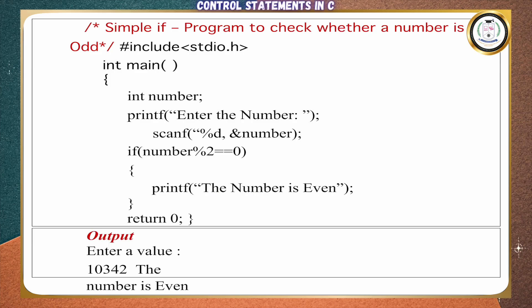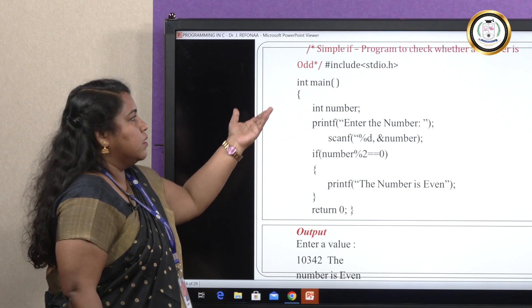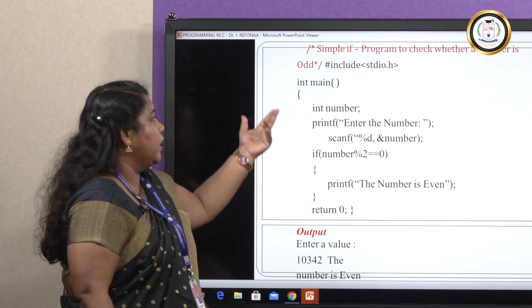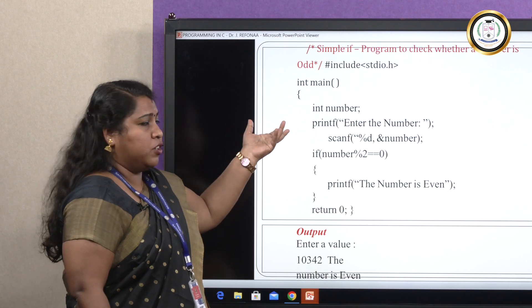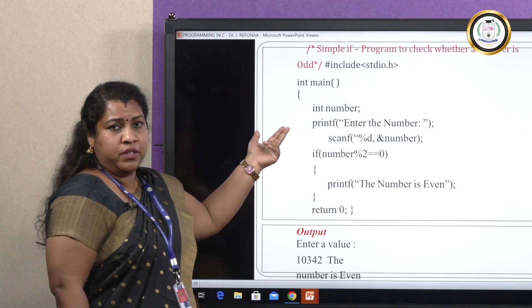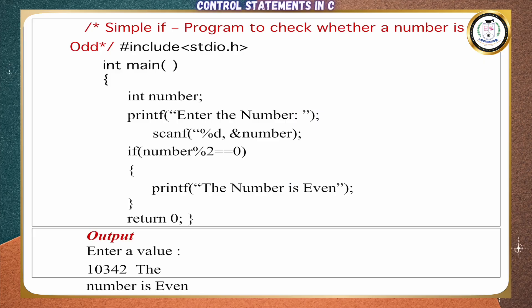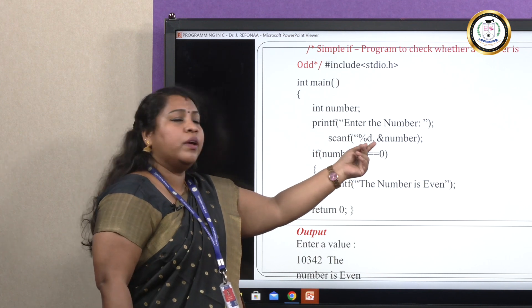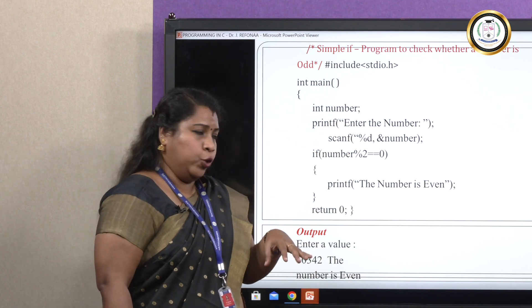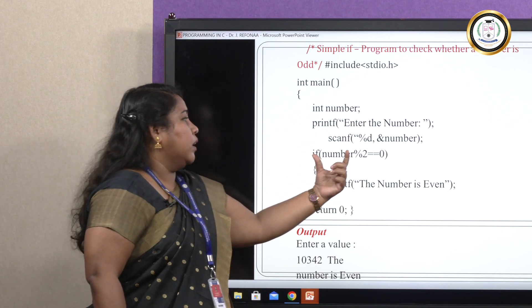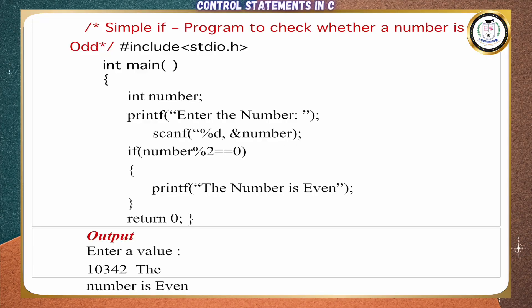Here we have a program to check whether the given number is odd. The program starts with the header file: #include stdio.h, which is the standard input-output. Next comes the main function, where program execution actually begins. We declare the variable: int number, where 'int' is the data type and 'number' is the variable name. Under printf, we print 'enter the number'. The scanf statement takes the input from the user. Now, as per the syntax, 'if' is the keyword and we give the condition as number modulo 2 equal to equal to 0.